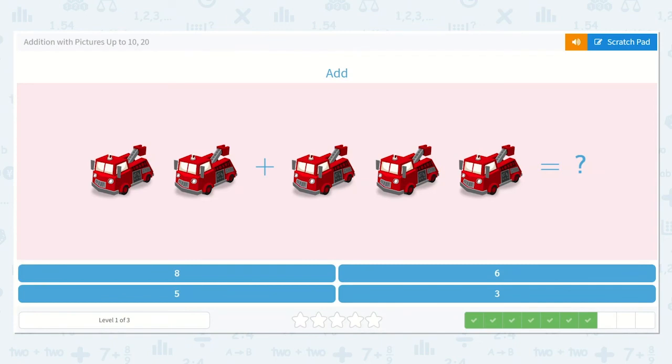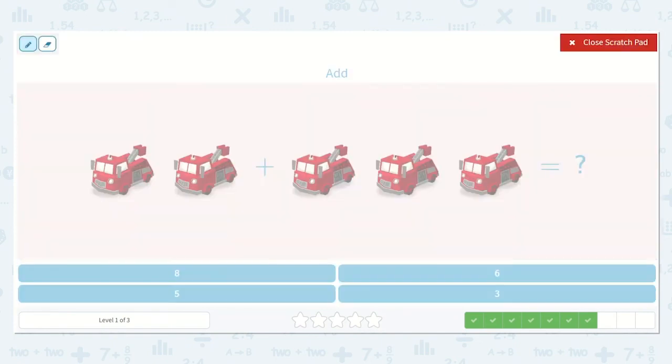Next we have fire trucks. 1, 2. I see 2 here in this first group plus a group of 1, 2, 3. Let's see what that is equal to. Let's count them all. 1, 2, 3, 4, 5. 2 plus 3 equals 5.